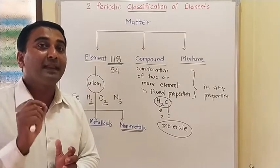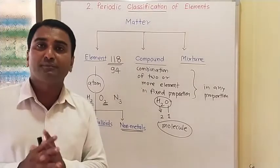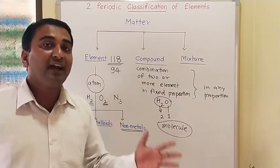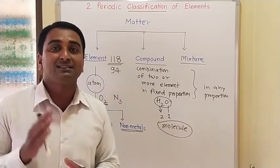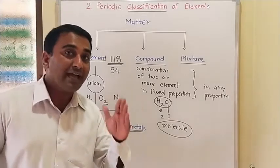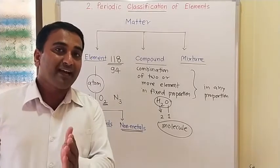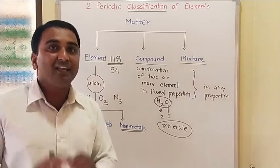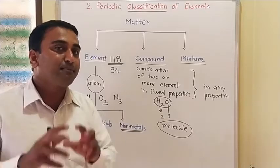One good example: consider playing cards. There are 52 playing cards. For better understanding, we divide these 52 cards into two groups — red cards and black cards. Within red cards, we have diamond and heart cards. Within black cards, we have spade and club cards. Similarly, by dividing elements into groups, it becomes easier to understand the properties of each element.